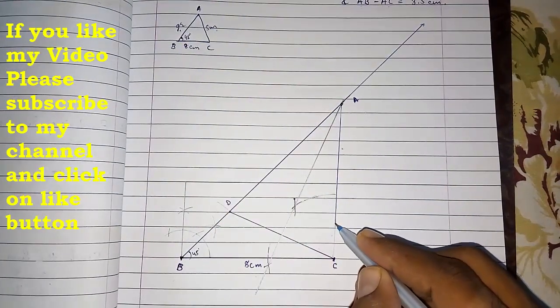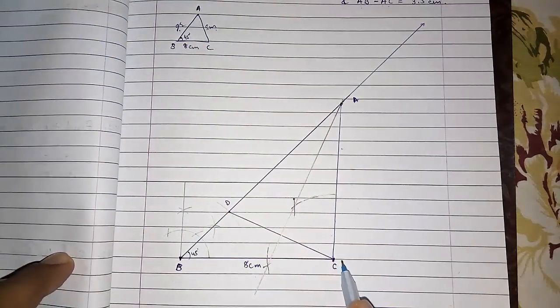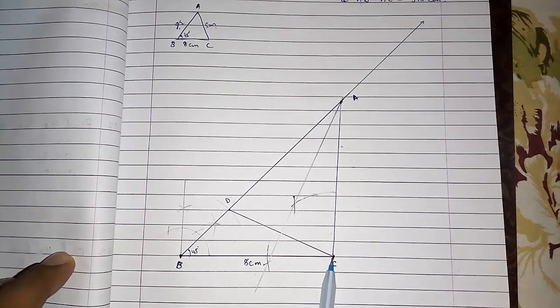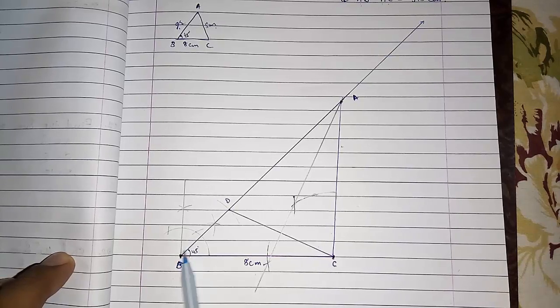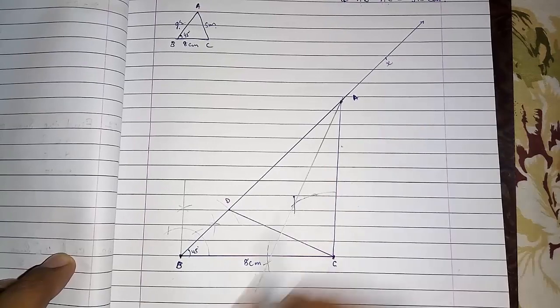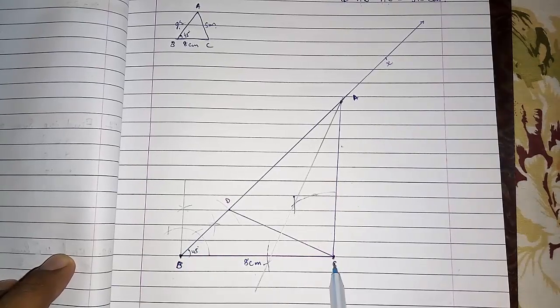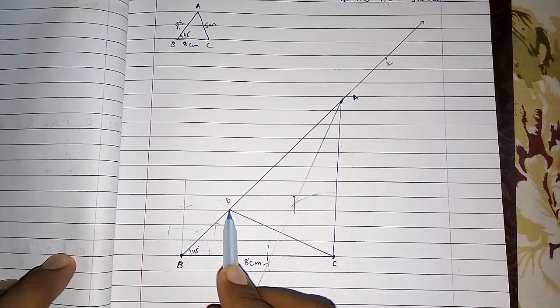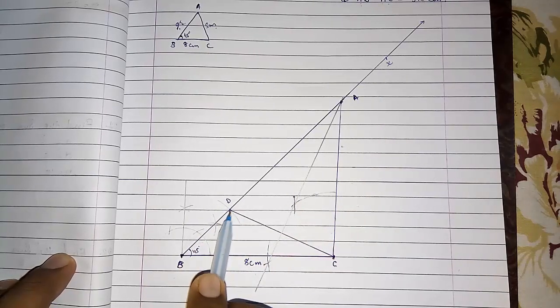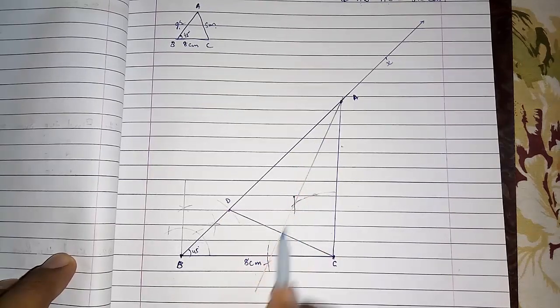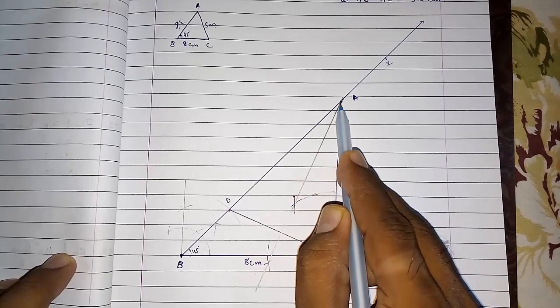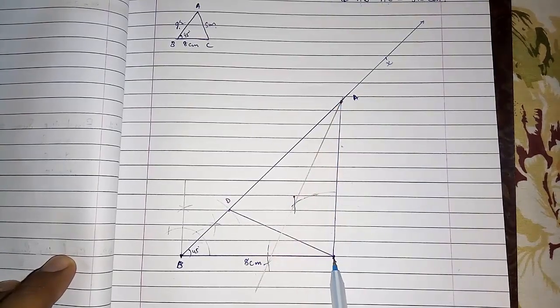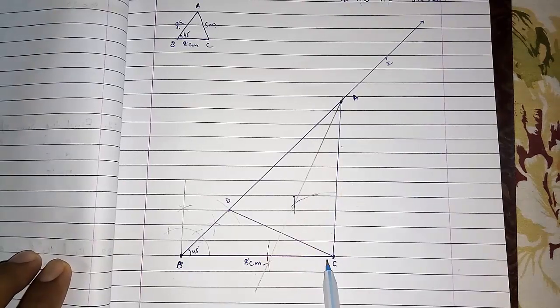Now this is your required triangle ABC. I am telling you the steps again. Step 1: draw line segment BC of 8 centimeters. Step 2: draw a ray BX making an angle of 45 degrees with BC. Then cut an arc of radius 3.5 on BX and where it is intersecting, give that point name D. Now join CD and draw the perpendicular bisector of CD. Where the perpendicular bisector intersects BX, give that point name A and join AC. Therefore, triangle ABC is the required triangle.